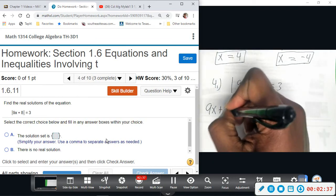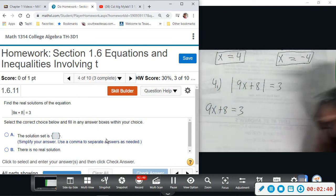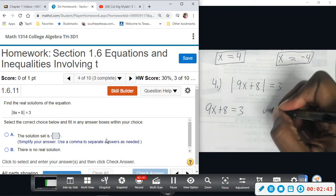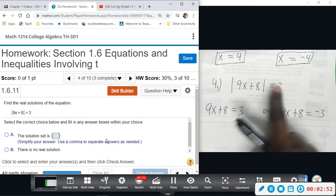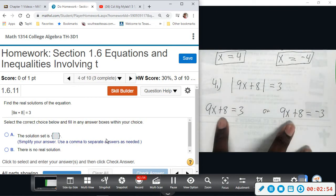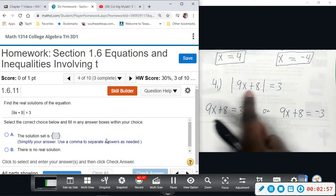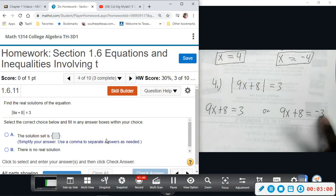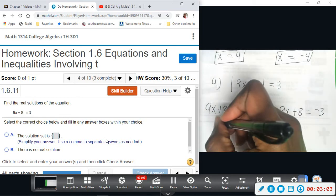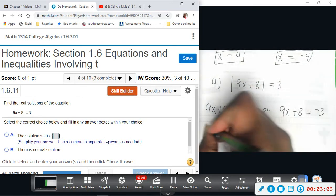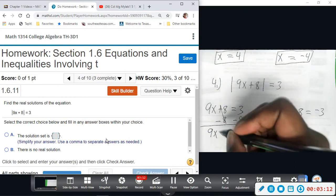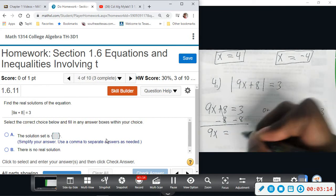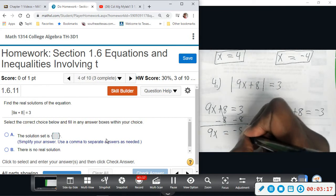Or this expression could have come out to be negative 3. So we don't set it negative with the absolute value, we set it negative afterwards. We're just saying this inside could be 3, or this inside could have came out to be negative 3, and we're trying to figure that out. So we will subtract 8 from both sides.